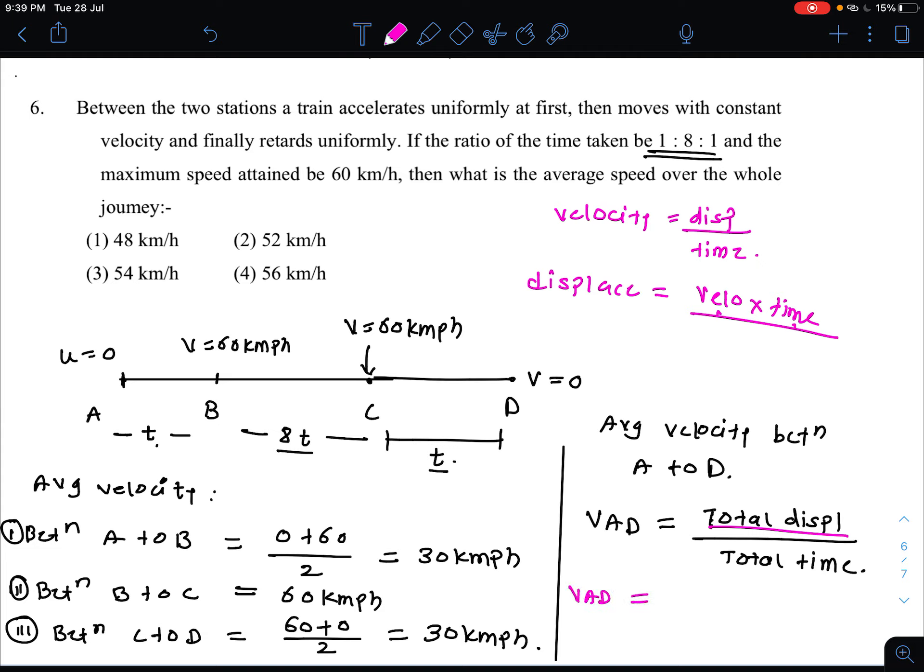A to B total displacement plus B to C plus C to D displacement. So 30t plus 60 times 8t plus 30t divided by total time t plus 8t plus t. When you solve this, your answer comes out to be 54 km per hour, option C.